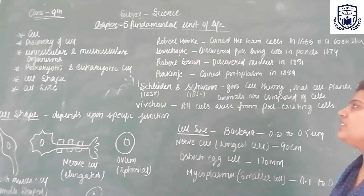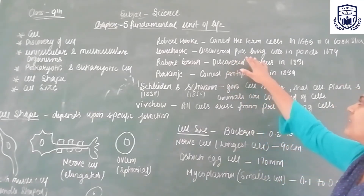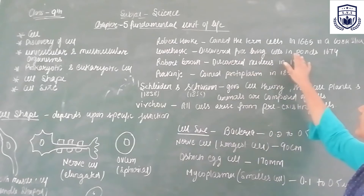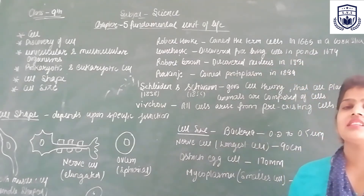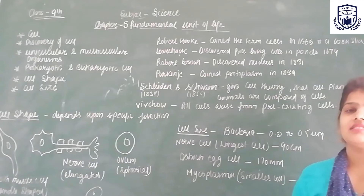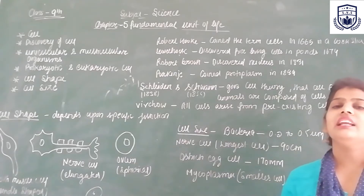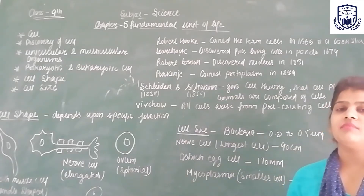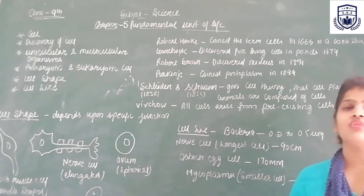Then Leeuwenhoek scientist ने क्या किया? उसने pond में, तालाब में, free living cells देखीं — 1674 में। Free living cell मतलब वो cells जिनमें life होती है, जो growth करती हैं।